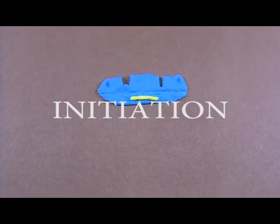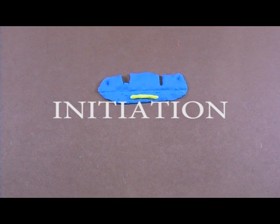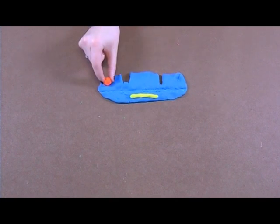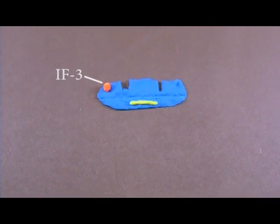Translation. Initiation. Initiation factor 3 is bound to the 30S ribosomal subunit to prevent the 70S ribosomal complex from forming.